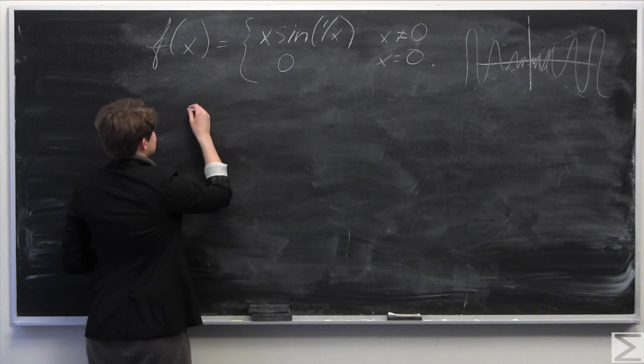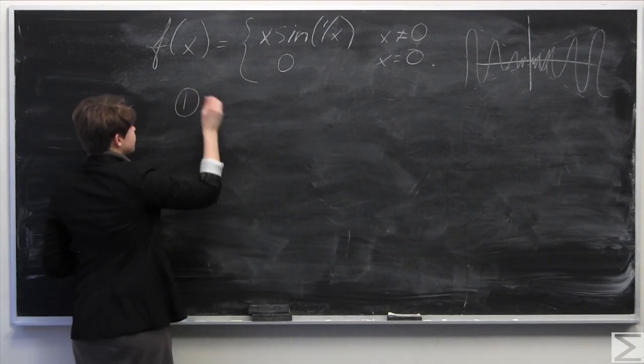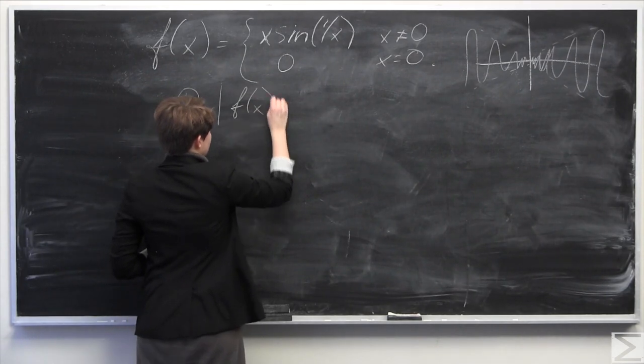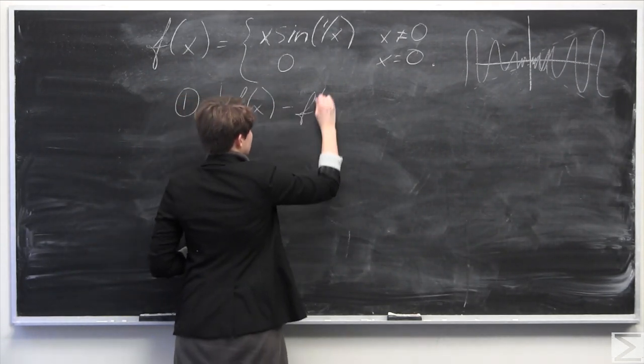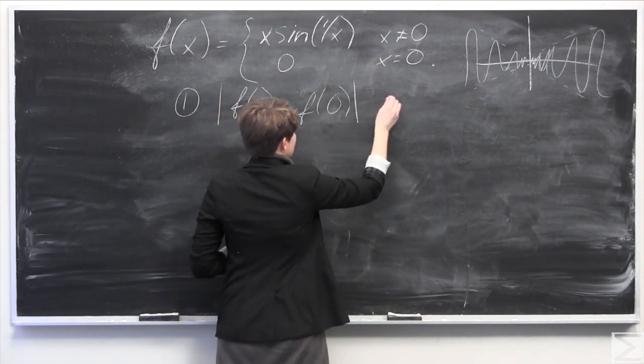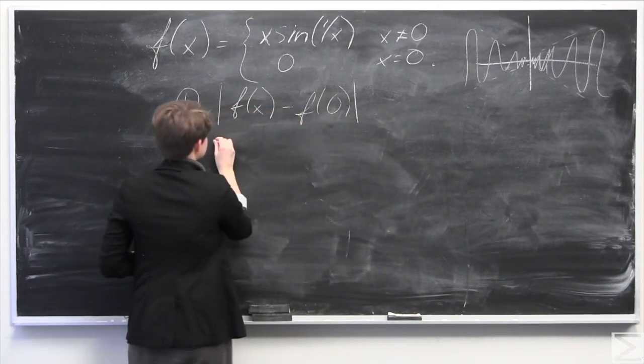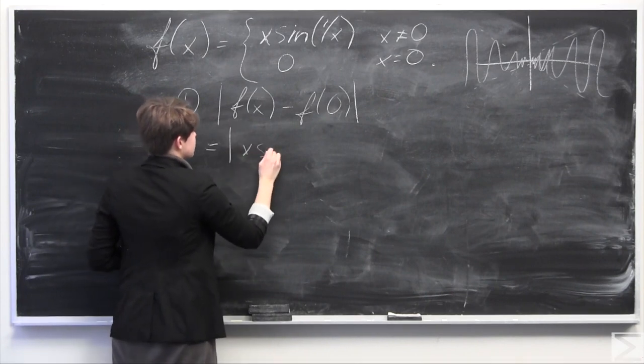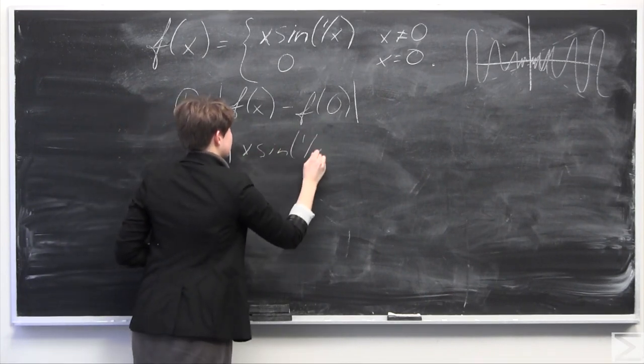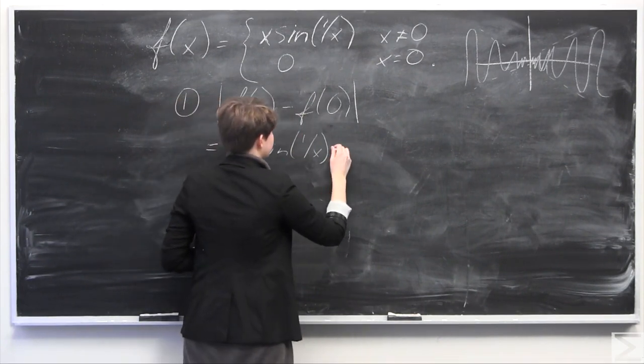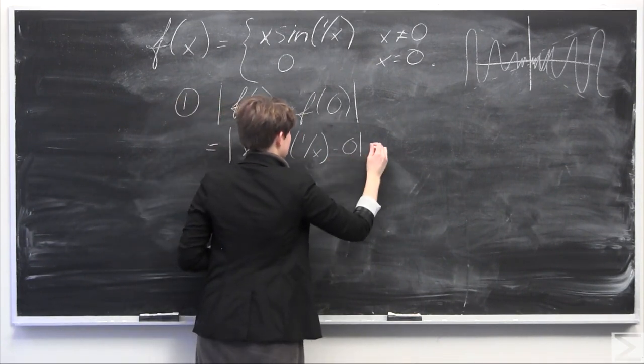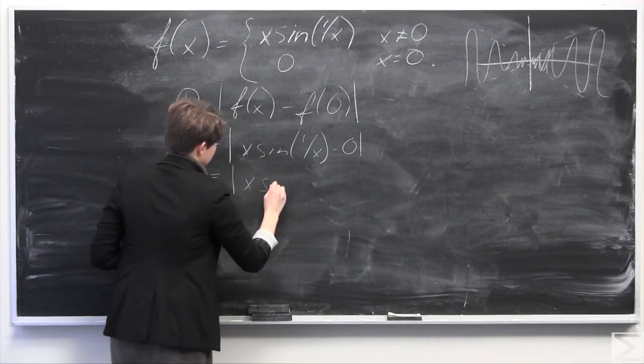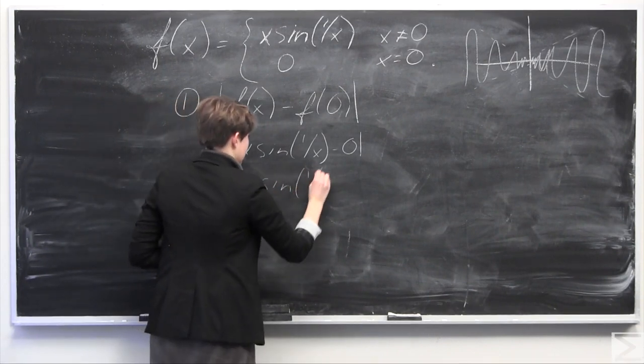So what I'm going to do here to prove that it's continuous is we'll take the absolute value of f of x minus f of 0, which equals, in this case, f of x equals x sine of 1 over x, and f of 0 is equal to 0, which equals x times the sine of 1 over x.